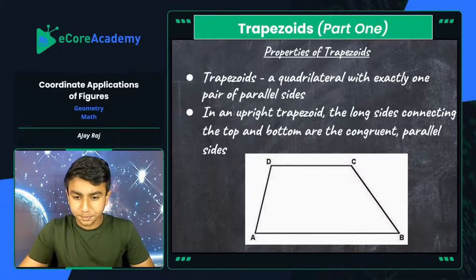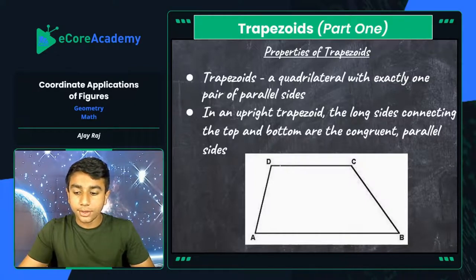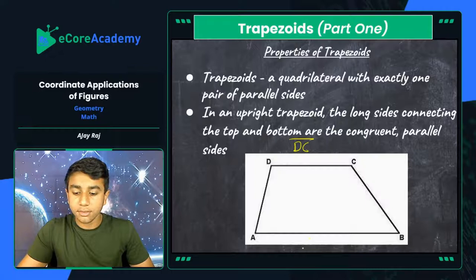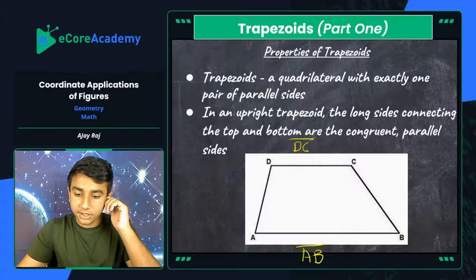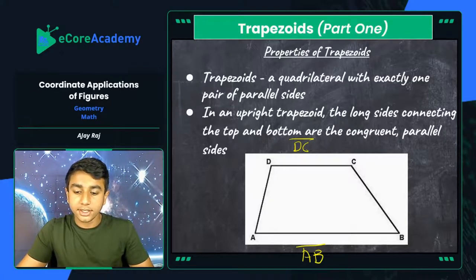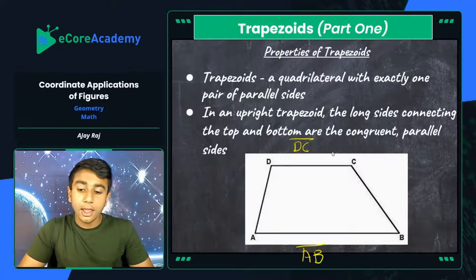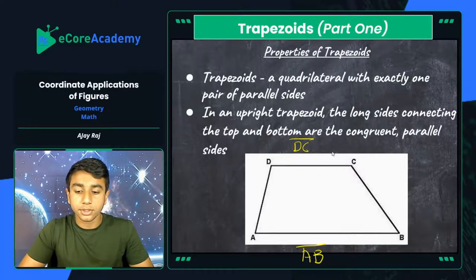Trapezoids are much more different from parallelograms — they only have one pair of parallel sides. Some different types include the right trapezoid, which can have three congruent sides but not all parallel. As you can see, side DA is not parallel to side CB by any means, making this a trapezoid.